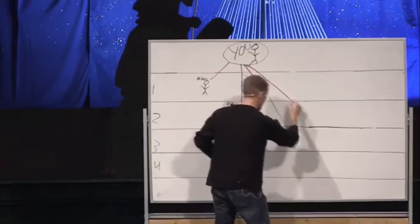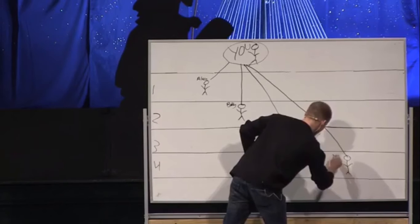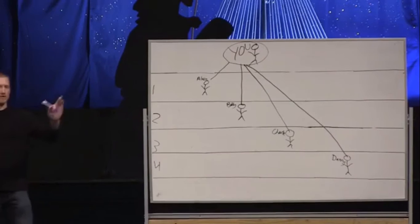And then year number four, I disciple Daniel. I'll call him Danny. Everybody with me so far? So after four years, I've invested in four people. I've discipled four people.